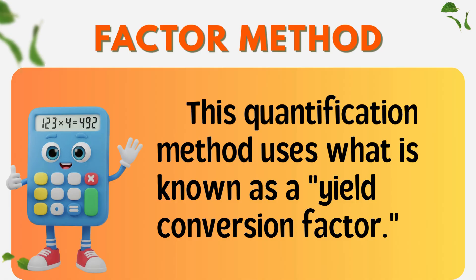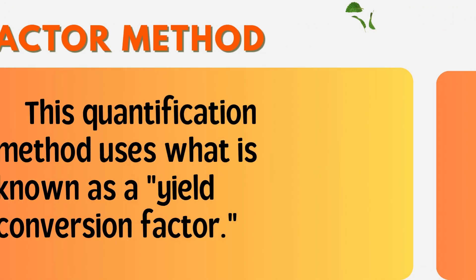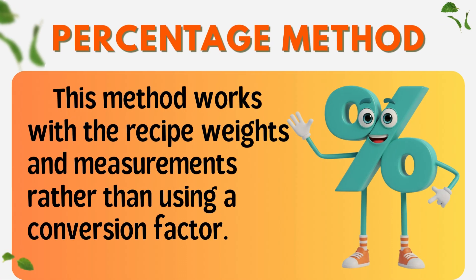Unlocking content vocabulary. Factor method: new yield divided by original yield, to multiply all original ingredient quantities. Percentage method: This method works with the recipe weights and measurements rather than using a conversion factor. It is a method of scaling a recipe based on the total weight of the recipe. Each ingredient's quantity is first converted into a percentage of the total recipe weight, allowing for easy adjustment to any desired final weight.